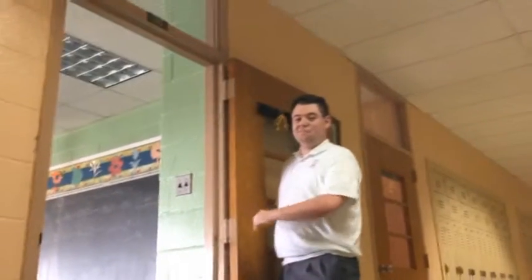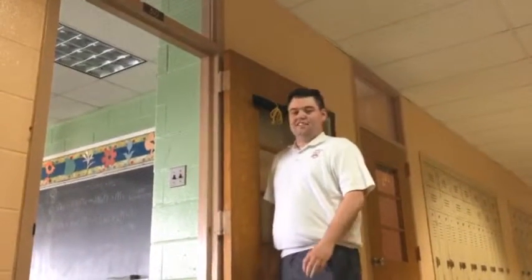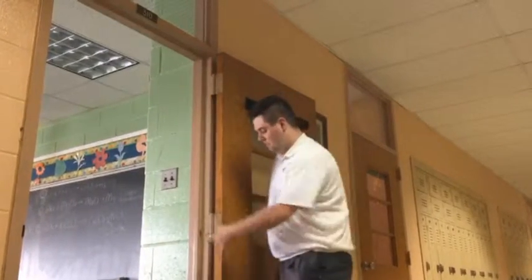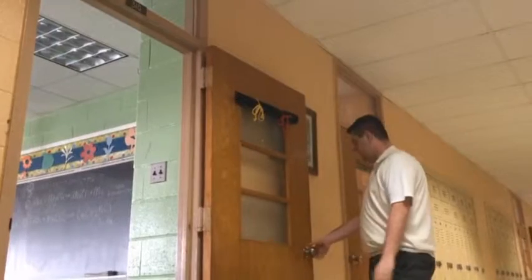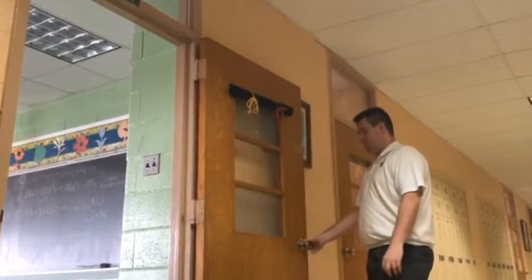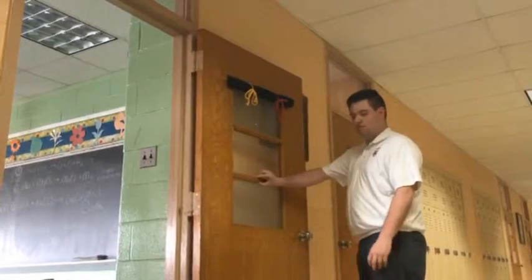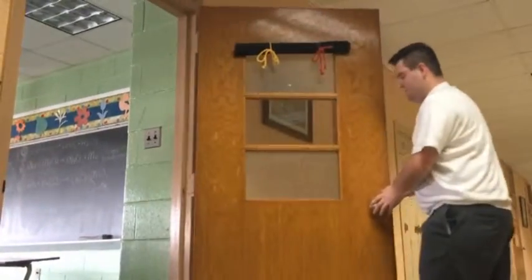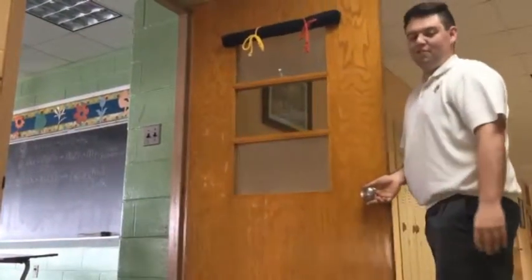The hinges on a door are an example of a second class lever. A lever is a bar that's free to turn around the fixed point called a fulcrum. The fulcrum is the hinges, the effort arm is the doorknob, and the resistance force is the door itself. So as I move the door, I apply force here, and the fulcrum allows the door to move.